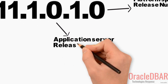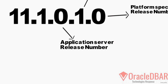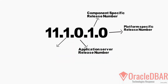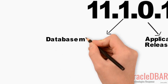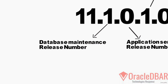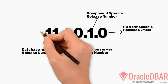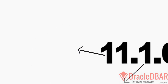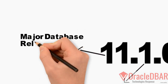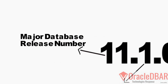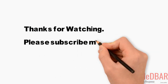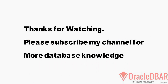The second digit stands for the database maintenance release number, and the leading 11 stands for the major database release number. Thanks for watching — please subscribe to the channel for more database-related details.